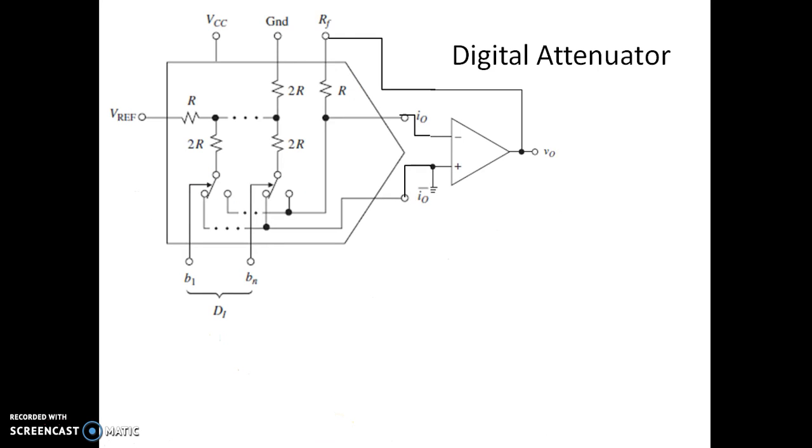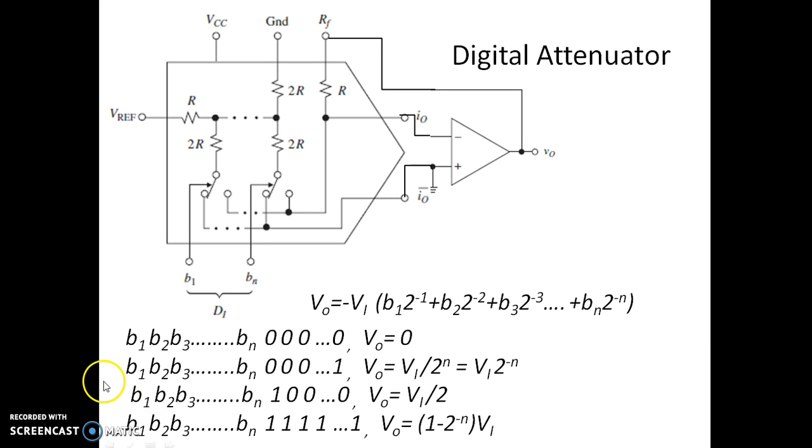So let us see what happens if we have the input combination as all zeros. If all the bits are 0, that is b1 to bn. Then we know that all the bit combinations, that is b1, b2, b3 all are 0, meaning that output voltage is 0. We are going to have maximum attenuation for the input signal. This is not V_reference now, this is actually V_IN. So this happens to be 0.